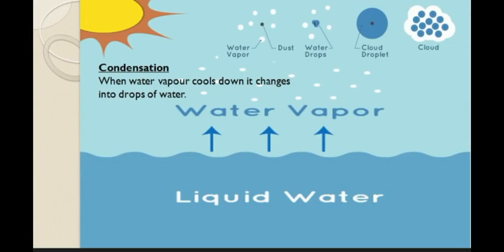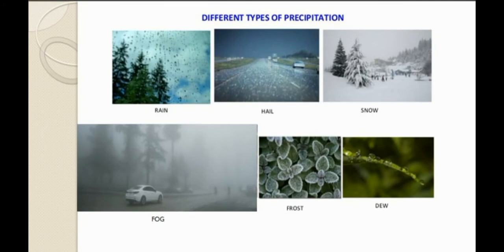When water vapor goes up into the atmosphere, it cools down and changes into drops of water, forming cloud droplets. As you can see in the picture, water vapor cools down and changes into water droplets to form clouds. This process is called condensation.